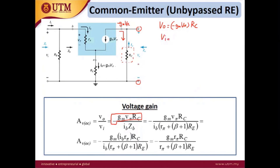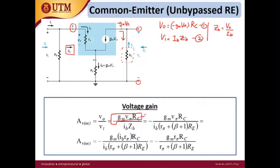For Vi, we have already calculated ZB. Since ZB equals VB over iB, and VB equals the input voltage Vi, we have Vi = iB·ZB. This gives us equation one (Vout = -gm·Vπ·RC) and equation two (Vi = iB·ZB).